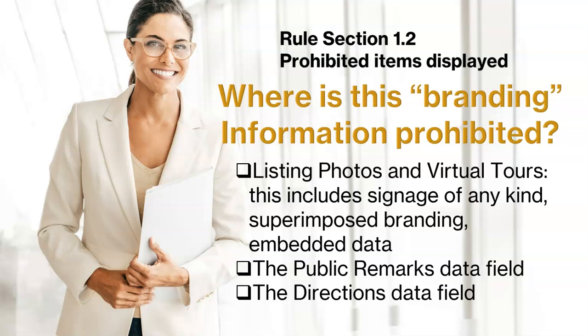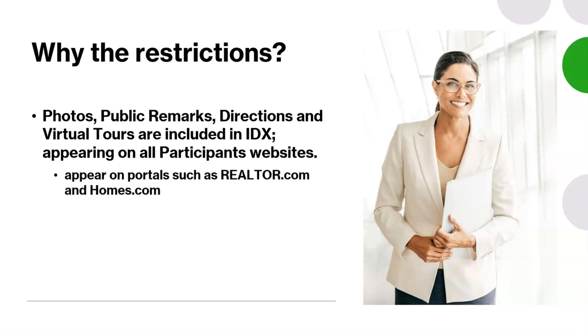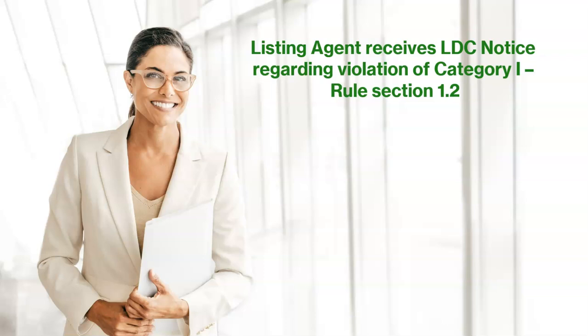Where is this branding information not allowed? Listing photos, virtual tours — and this includes signage of any kind, superimposed branding, and embedded data. Branding information cannot be in the public remarks data fields or the direction fields. Why the restrictions? This information is included in IDX appearing on all participants' websites. They also appear on portals such as Realtor.com and Holmes.com. This information is also included when other agents email listings to their clients.